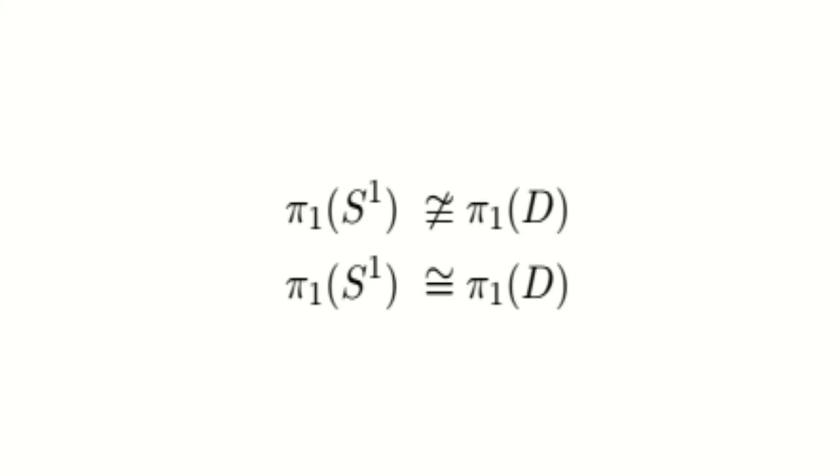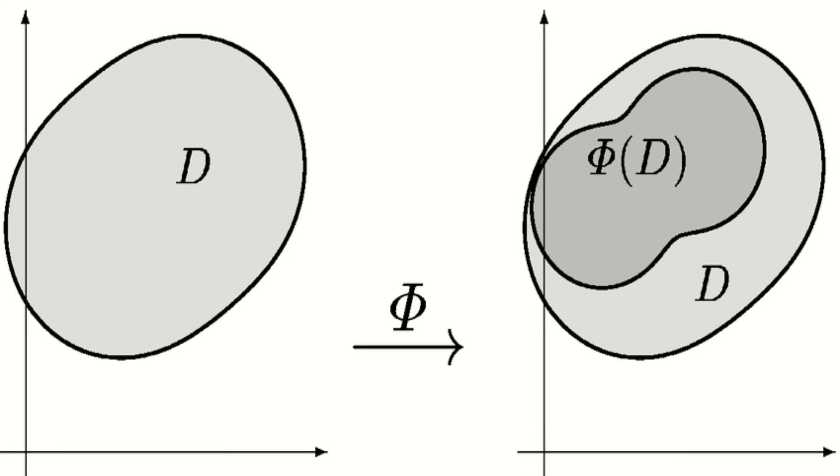Therefore, our original assumption that there exists a function f from the disk to itself that does not admit a fixed point is incorrect. Furthermore, according to reductio ad absurdum, all continuous maps from the disk to itself admit a fixed point.